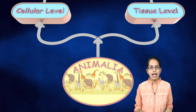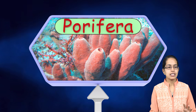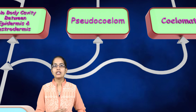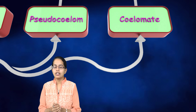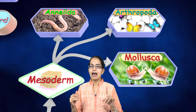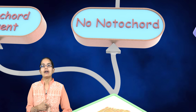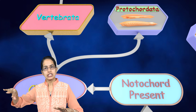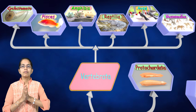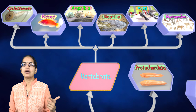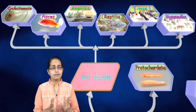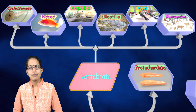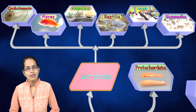A quick recap of animal classification: cellular level has Porifera; tissue level with no cavity between epidermis and gastrodermis includes Coelentrata and Platyhelminthes; pseudocoelomates include nematode and roundworm; coelomates divide into mesoderm types — Annelida, Mollusca, and Arthropoda — and endoderm types, which include Echinodermata (no notochord), Protochordata (primitive notochord in larval stage), and Chordata/vertebrates (vertebral column). Vertebrates are subdivided into Cyclostomata, Pisces, Amphibia, Reptiles, Aves, and Mammalia. We will be covering more interesting topics in the next lectures. If you have any doubts, feel free to post them as comments below.